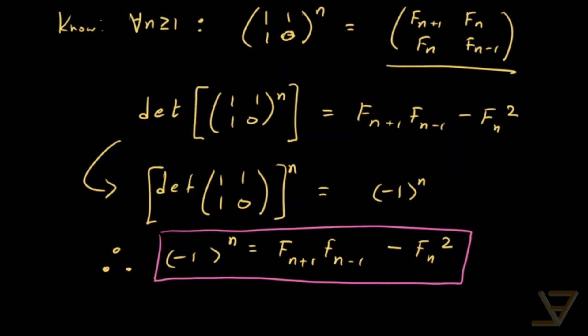There are lots of identities like this. For example, Cassini is generalized by something called Catalan's identity, and Catalan is generalized by something called Vadia's identity. So there are lots of identities like this, and I just wanted to show you one of them here.